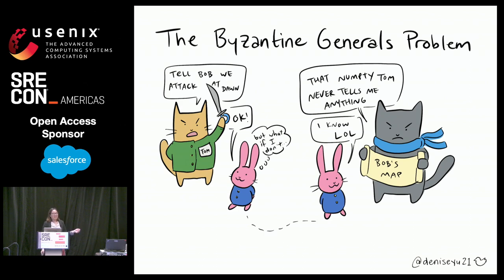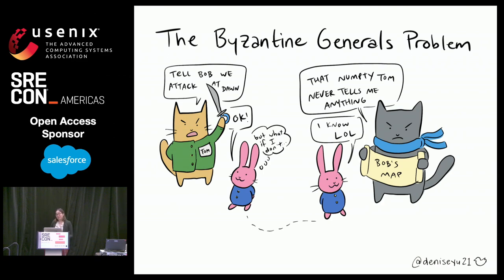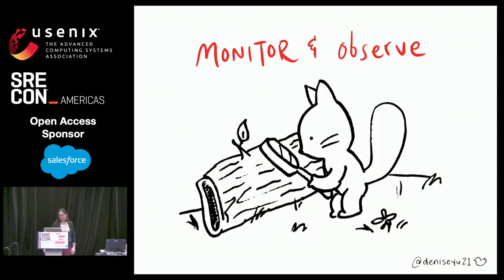This kind of thing actually happens all the time in distributed systems. We have some tools — we can use mutual TLS with host verification to say this probably came from someone I expected. But we always have to be thinking about ways that people get around that, like spoofing, tampering, messages getting corrupted in mid-flight. We can mitigate a lot of these problems by monitoring and observing our systems properly.